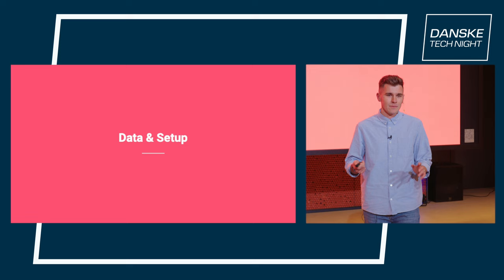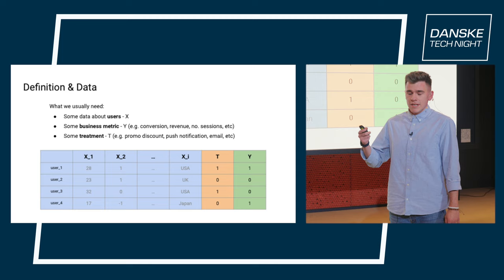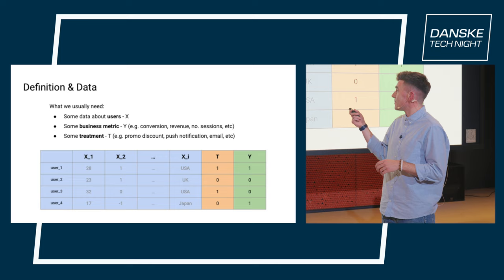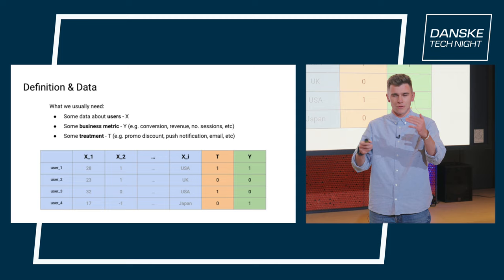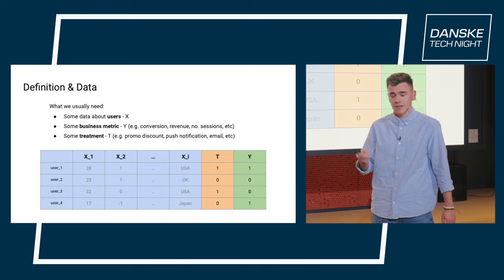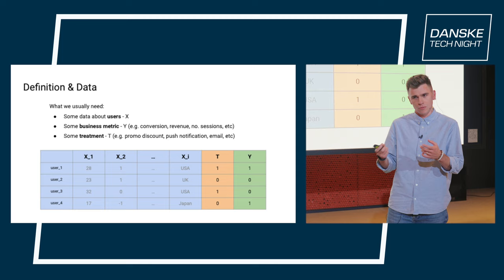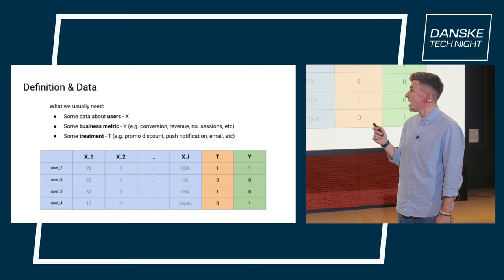Before we dive in, let's look at the standard data setup. In classical tabular machine learning you have a dataset with features and a target column. Here we have almost the same setup, except for an additional treatment column — a binary flag indicating whether this user received a promotion or discount. The target column can be your final business metric directly: revenue, conversion, or whether the user didn't leave your app.